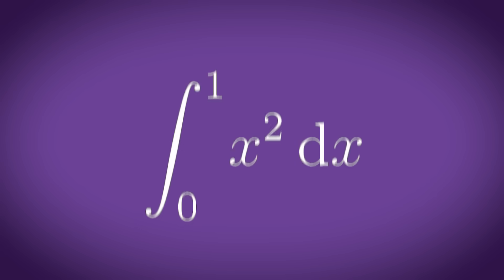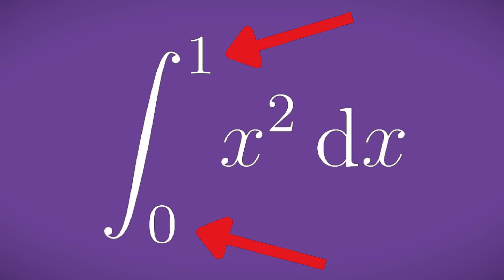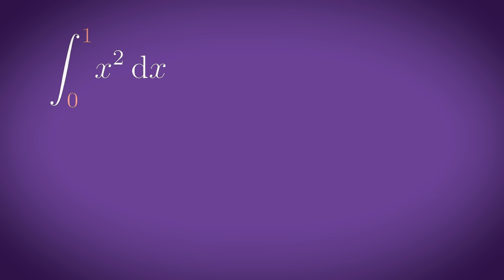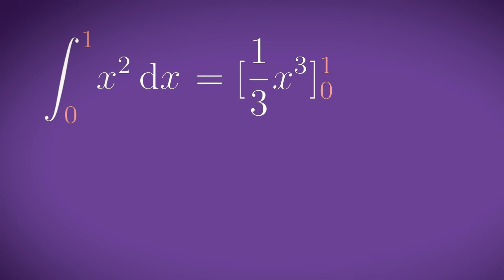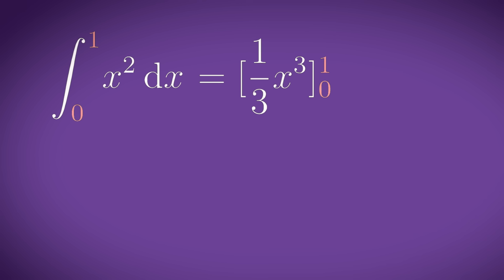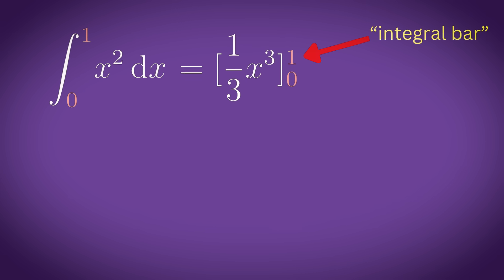2. Definite integral. A definite integral will have two numbers next to the integral sign. These are called the limits and to solve this you do the exact same thing you did with the indefinite integral only instead of adding c at the end you add something called the integral bar around it.